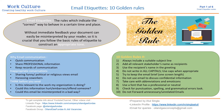Email etiquettes — 10 golden rules. Etiquettes are the rules which indicate the correct way to behave in a certain time and place. If we relate etiquettes with email, it becomes email etiquettes: how we are going to behave in a certain time and place. Whenever we are writing an email, we need to keep certain points in our mind.